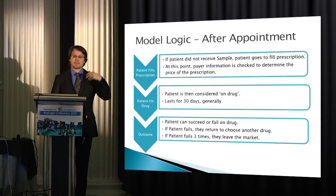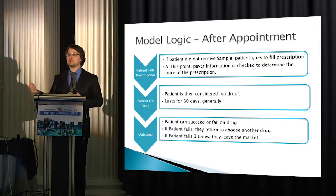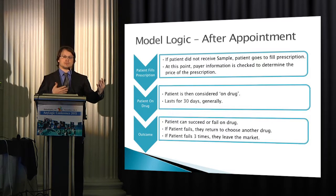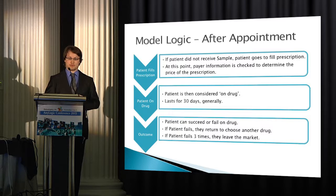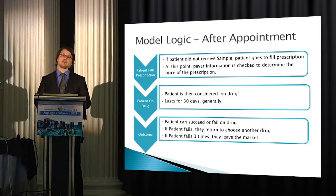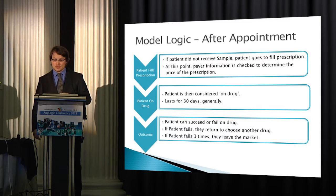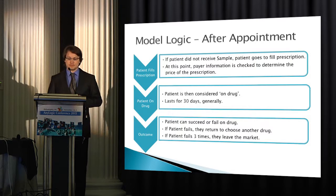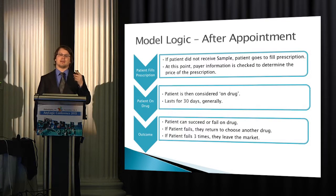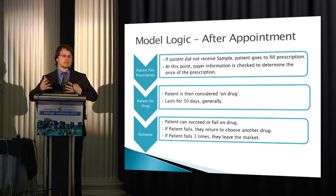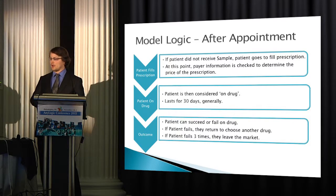After the appointment, if they don't receive a sample, they get a prescription and go to try to fill it. At this point the payer becomes involved — whether they get it filled depends on how much it costs, which depends on what their payer is, whether it's on formulary, and what tier. A tier 2 drug might cost $100, another tier might cost $150, and the cash price might be $500 if the drug isn't even on the formulary. If the patient decides to get the prescription, they are considered on drug, they go 30 days, and we check for clinical failure. If the patient fails on that drug, they will not try it again. If they haven't failed three times, they go back and, once they talk to their doctor again, they try a different drug. If they fail three times, they simply leave the market — a three strikes and you're out approach.